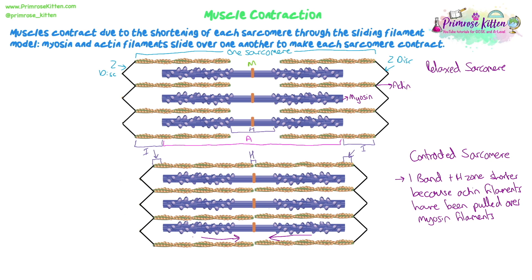The H zone has also got shorter. The H zone is the gap between the actin filaments where you can only see the myosin, and as the actin filaments get pulled closer together, the H zone gets smaller.